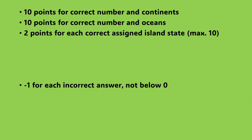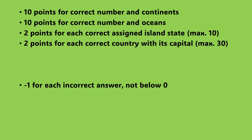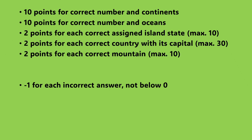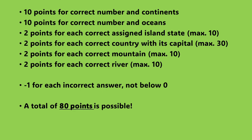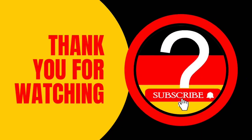Two points are awarded for each of the island states, but not for no or incorrect answers. There are also two points for countries with a capital city, but only one point if only the country is correct and the capital city is missing or incorrect. Two points are awarded for each correct mountain — importantly, the highest mountain on the continent — and also two points for each correct river. That makes 80 points if everything was correct. Don't cheat. I hope you enjoyed the quiz, thank you for your attention, and stay curious.